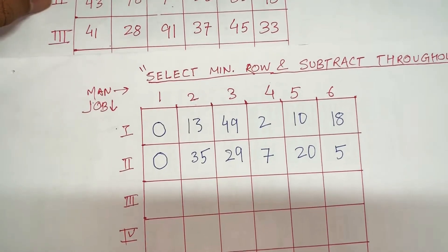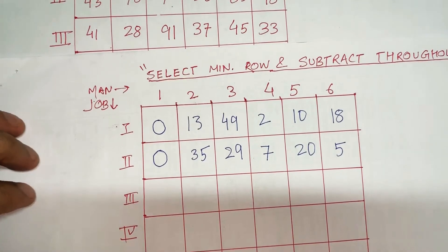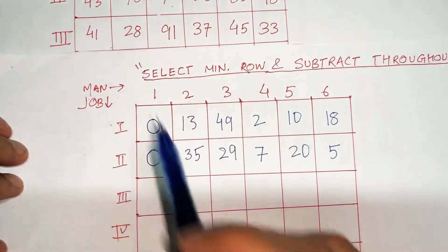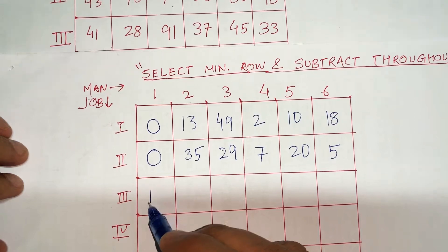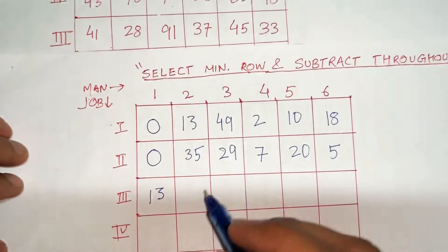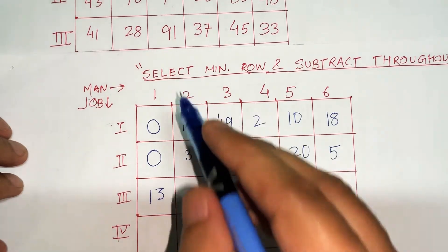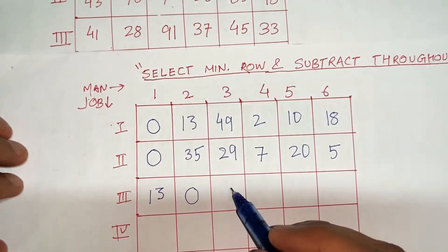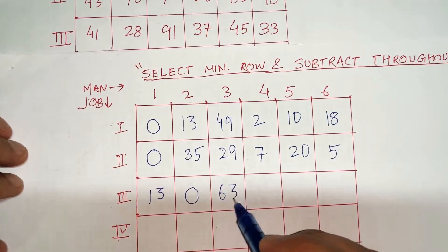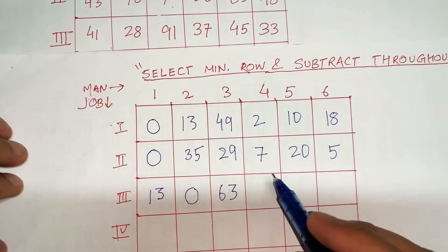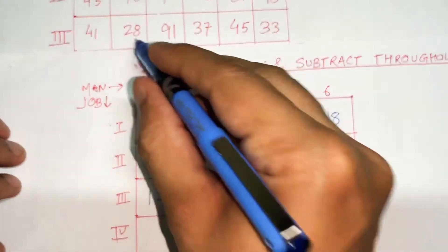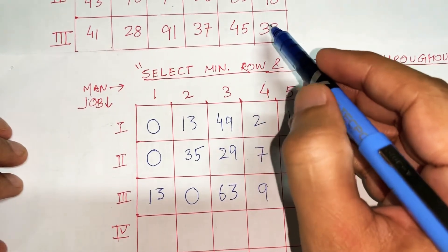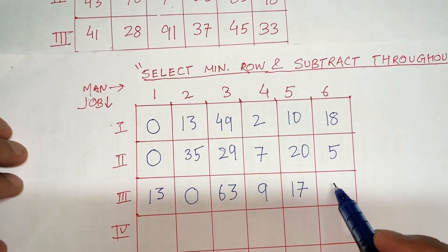Let's see the third row now. The minimum here is 28, so we are going to subtract 28 throughout: 41-28=13, 28-28=0, 91-28=63, 37-28=9, 45-28=17, and 33-28=5.